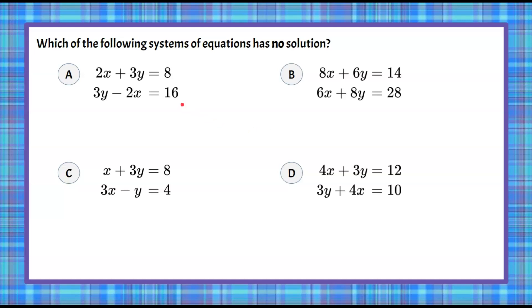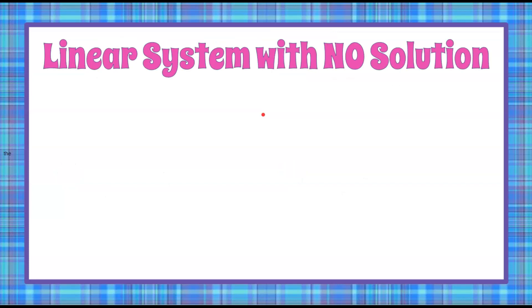Welcome back. So we're given four answer choices. There are many different ways you could approach this, but let's first review what no solution means to a system of linear equations. A linear system with no solution will be lines that are parallel, meaning they will never intersect. That's why there's no solution.